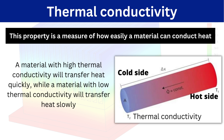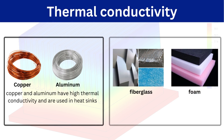Let's discuss thermal conductivity. Thermal conductivity is the property of material that describes how easily the material can conduct heat. If one end of a component is heated, how easily the other end can be heated depends on heat transfer. The material with high thermal conductivity will transfer heat quickly, and the material with lower thermal conductivity will transfer heat slowly.